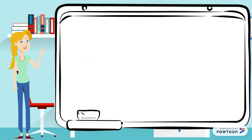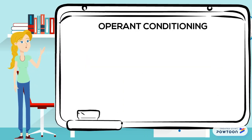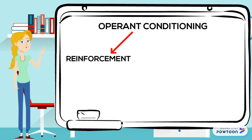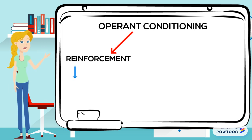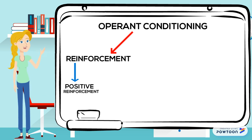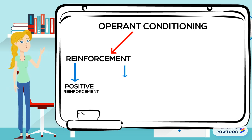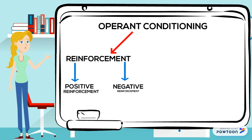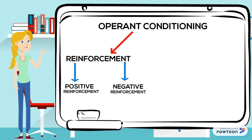Operant conditioning can occur in two ways. One of the ways is reinforcement, which strengthens behaviour, making it more likely for it to be repeated. Positive reinforcement strengthens behaviour by exposing a person to a consequence they find rewarding. Negative reinforcement strengthens behaviour because it stops or removes an unpleasant experience.